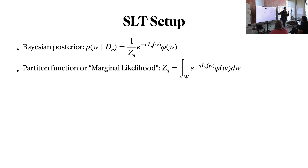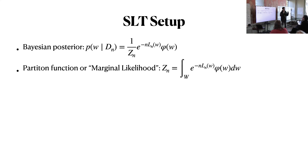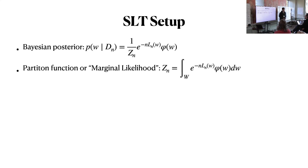Other important quantities in SLT: the Bayesian posterior, where Z_n denotes the partition function, also known as the marginal likelihood. It's worth explaining why it's called that — it is the likelihood if you marginalize across all parameters of the model. If you have two different models with their own parameter spaces, once you marginalize them, this Z quantity is the likelihood that you observe the data if you use model one or model two. It's the likelihood of the model and the prior; using the same model with a different prior will change this quantity.